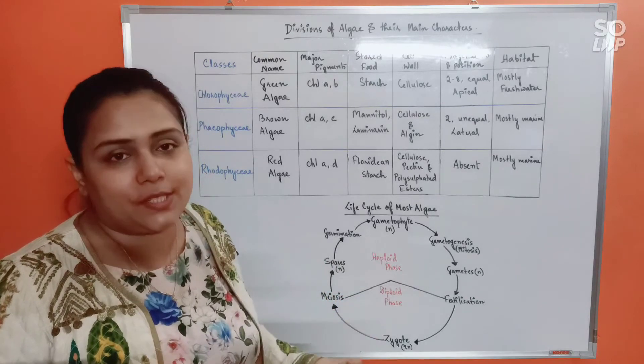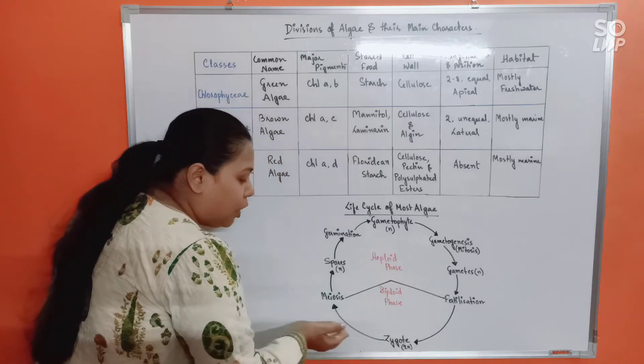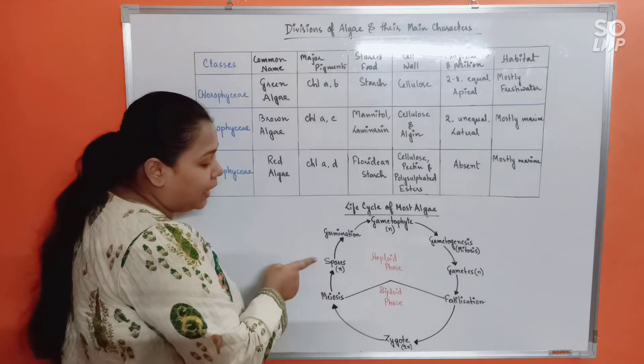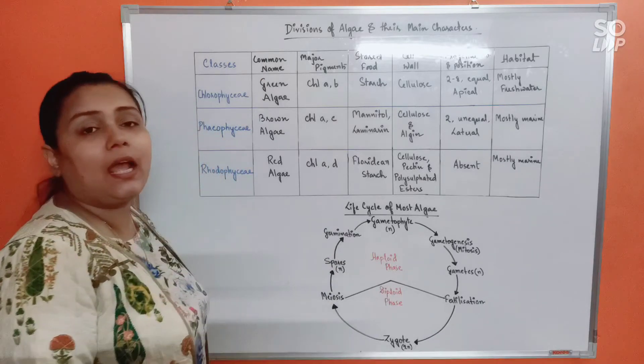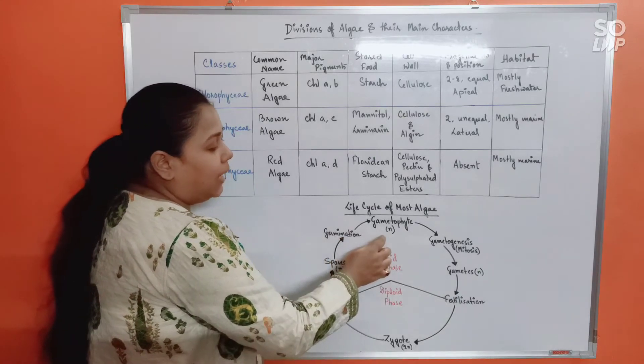So by meiosis, now what will be formed are haploid cells. As if the zygote immediately is undergoing meiosis to give rise to the haploid state back again. So by meiosis, what are formed are haploid spores. These spores will eventually germinate, giving rise to again haploid gametophytic plant body.